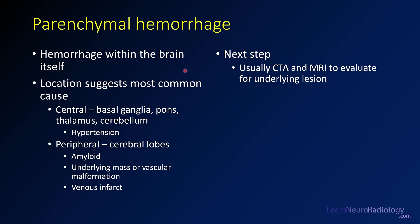Parenchymal hemorrhage is hemorrhage within the brain tissue itself. The location of the hemorrhage can suggest the most common cause. By far the most common is a central hemorrhage in the basal ganglia, pons, thalamus, or cerebellum — these are typically hypertensive. Peripherally located hemorrhages might suggest underlying causes such as a tumor, metastatic disease, venous infarct, vascular malformation, or in older patients, amyloid angiopathy. Most parenchymal hemorrhage patients will get CTA and/or MRA to look for an underlying lesion such as a tumor or vascular malformation.